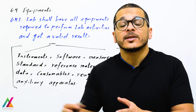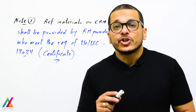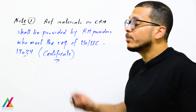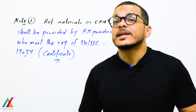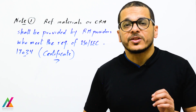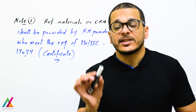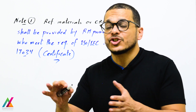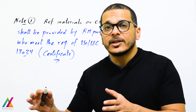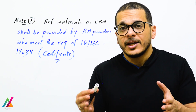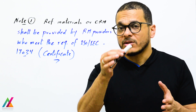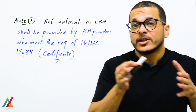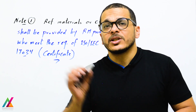All facilities related to the lab activity and the analysis of target analytes are now considered equipment. Note 1 states that reference materials or certified reference materials (CRM) shall be provided by a reference material provider who meets the requirements of ISO IEC 17034. The CRM certificate shall include homogeneity, stability, measurement uncertainty for each parameter, and metrological traceability, along with the target analyte results with an acceptable range.